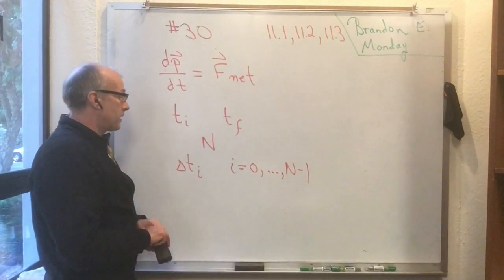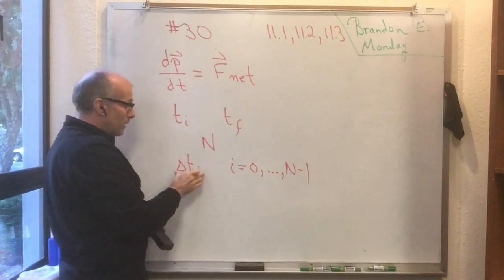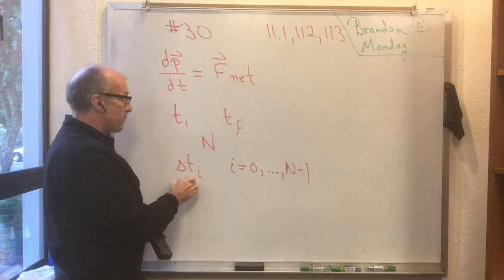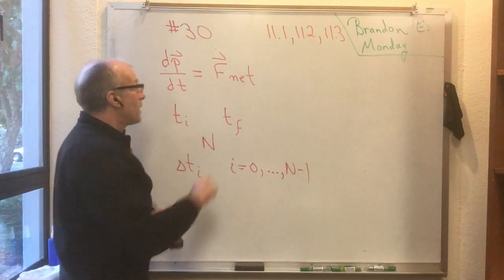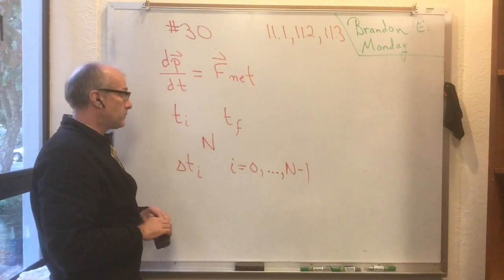Let's chop this up into a whole bunch of little times, delta t sub i, that cover that range, t_initial to t_final. And in any one of those little time intervals, we're going to make sure that n is sufficiently large, or the little time intervals are sufficiently small, that F_net doesn't change much over that time.